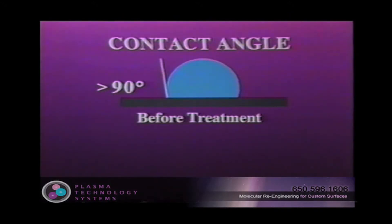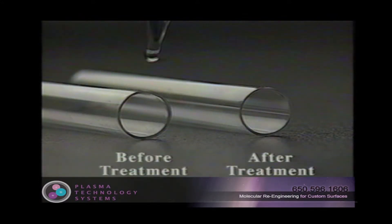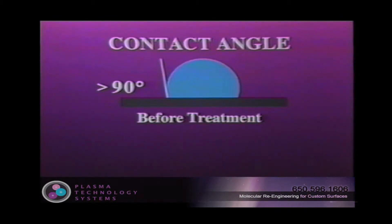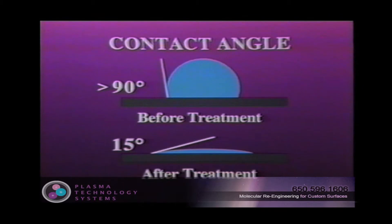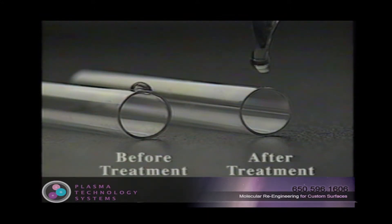One of the most obvious features of a plasma-treated plastic is its change in wetting characteristics. As molded, plastics have a low surface energy and a high contact angle. A contact angle greater than 90 degrees is not uncommon for plastics as molded. Unless a process gas is specifically selected to impart hydrophobic surface characteristics, plasma treatment results in a highly active surface and correspondingly low contact angle. Typically on a plasma-treated surface, the water droplet is self-spreading.